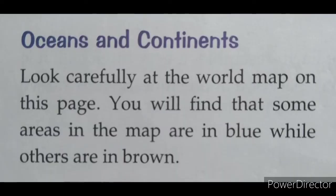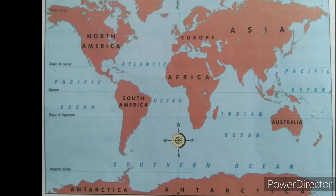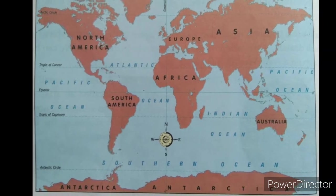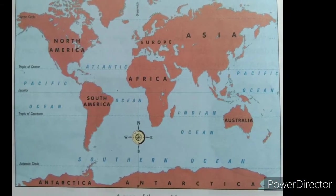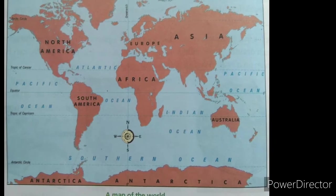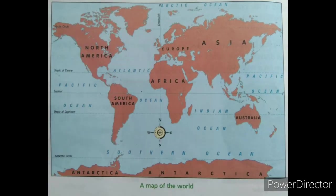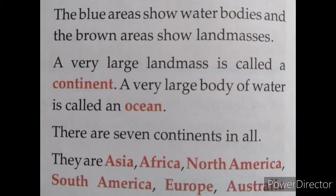Oceans and continents. Look carefully at the world map. You will find that some areas on the map are in blue while others are in brown. The places in brown signify land, and the places in blue signify a water body — the oceans are shown in blue. The blue area shows water bodies and the brown area shows land mass.